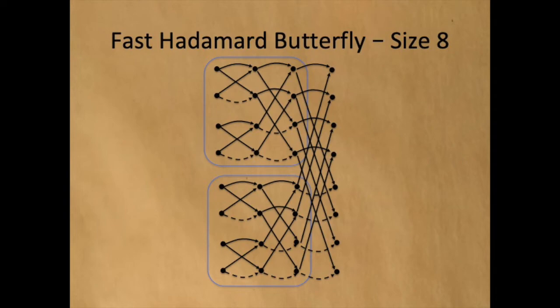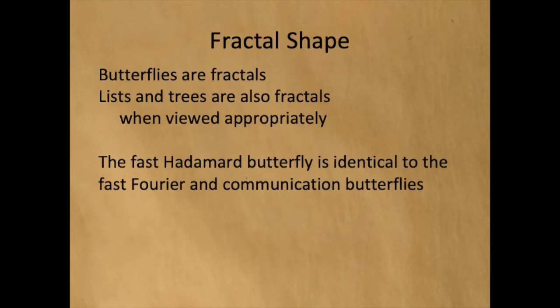And the fast Hadamard butterfly of size 8 combines two butterflies of size 4, as shown in blue. The fast Hadamard transform has a fractal shape. Note that lists and trees are also fractals when viewed appropriately. The fast Hadamard butterfly is identical to the fast Fourier butterfly and to other computational butterflies in computer science.